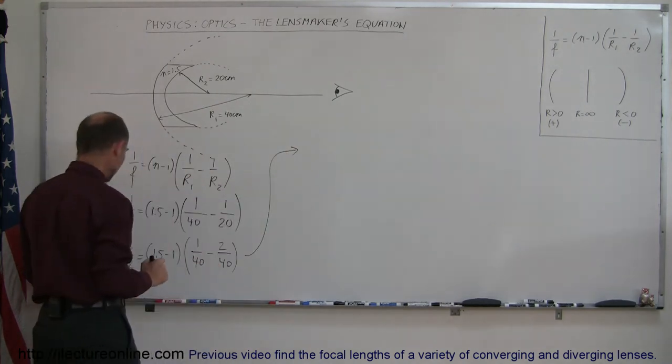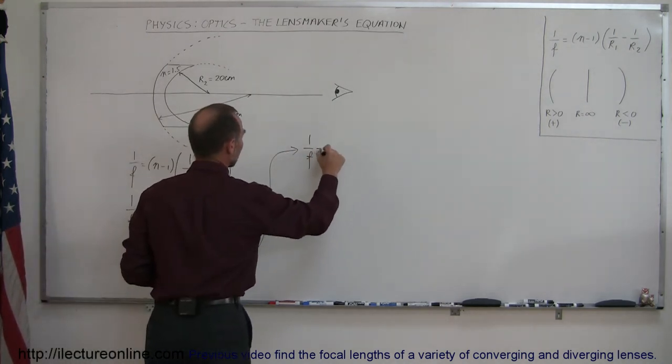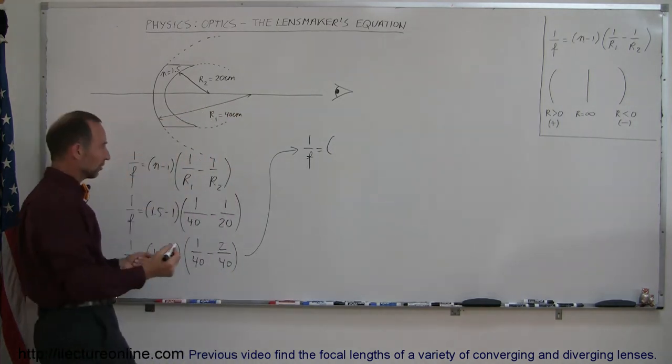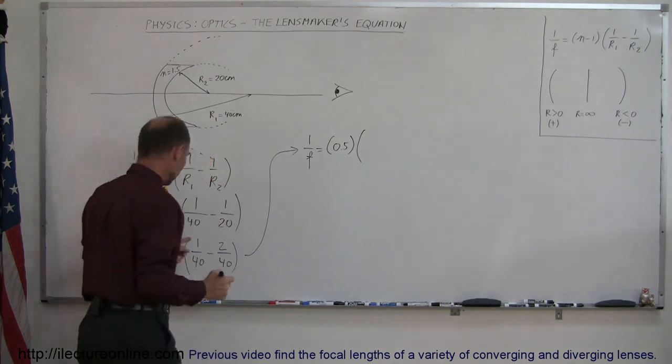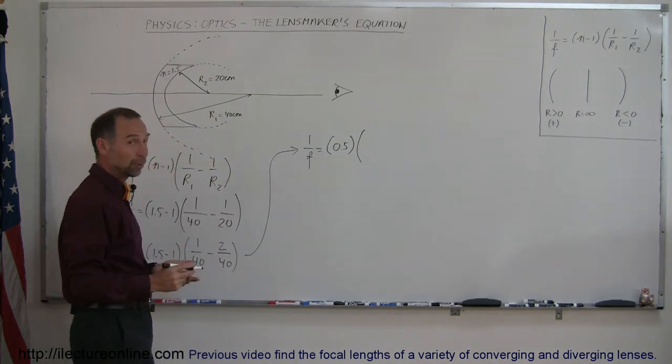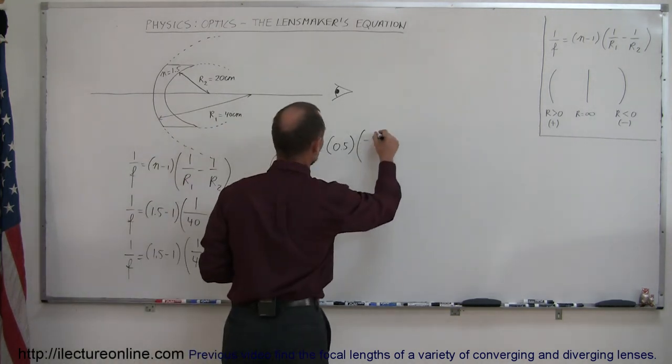So we have 1 over f is equal to 1.5 minus 1 is equal to 0.5 times 1 over 40 minus 2 over 40. That would be minus 1 over 40.